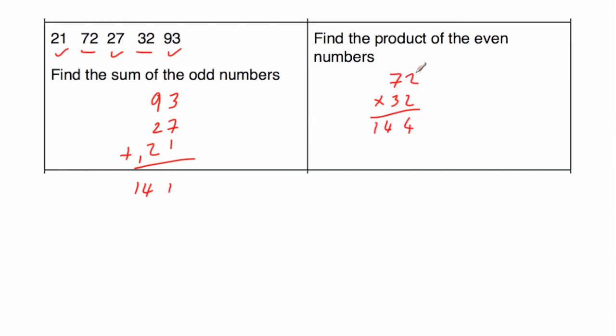Now we're going to multiply 72 by 30, so put the 0 down. 3 times 2 is 6, and 3 times 7 is 21. And then we're going to add them together. 4 plus 0 is 4. 4 plus 6 is 10, so put the 0 down, carry the 1. 1 plus 1 plus 1 is 3 and 2. So the product of the even numbers 72 and 32 would be 2,304.